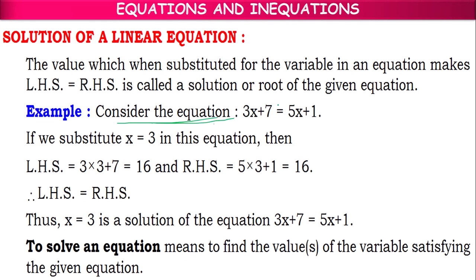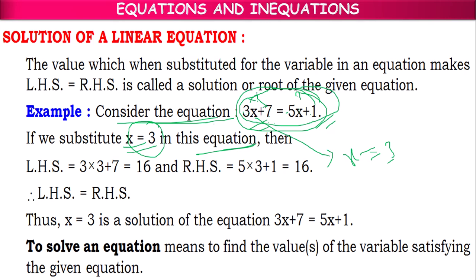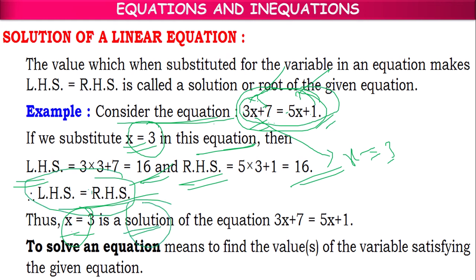So here, if you consider the equation 3X plus 7 equal to 5X plus 1. If you keep 3 in the place of X: 3 into 3 is 9, plus 7 is 16 on the left side. On the right side, 5 into 3 is 15, plus 1 is 16. Means if we substitute X equal to 3, LHS value is 16 and RHS value is 16 — LHS equal to RHS. So X equal to 3 is called the solution, or the root, of the equation 3X plus 7 equal to 5X plus 1.